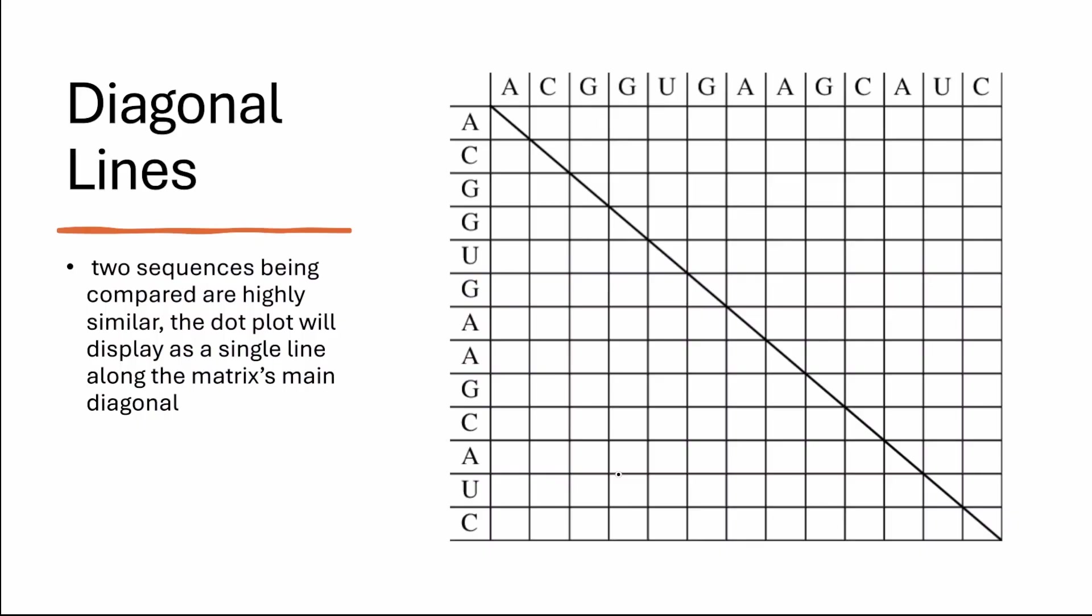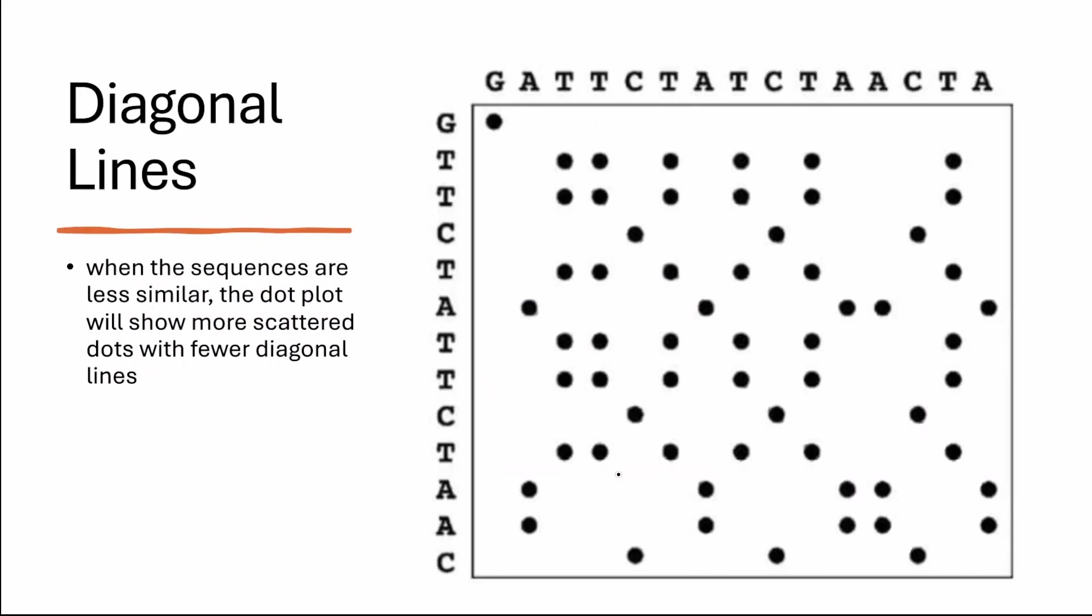However, when the sequences are less similar, the dot plot will show more scattered dots with fewer diagonal lines, indicating that the sequence is shared less similarity.